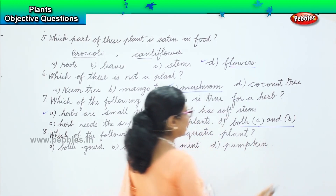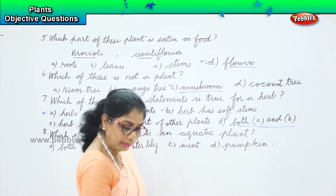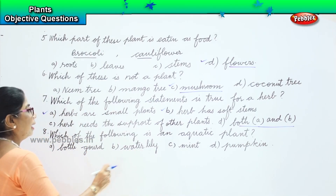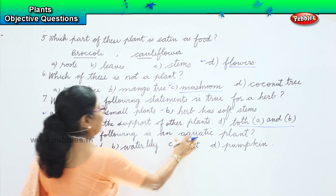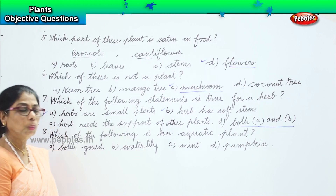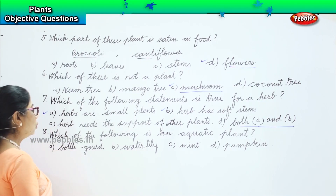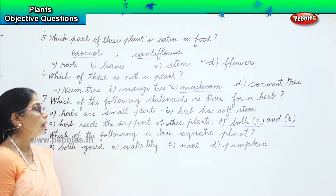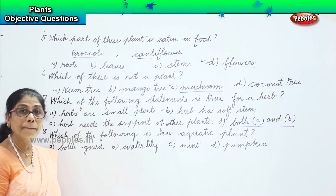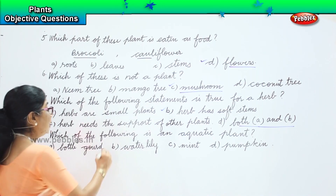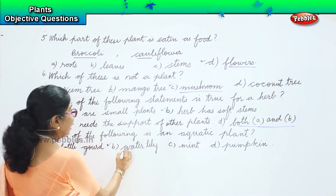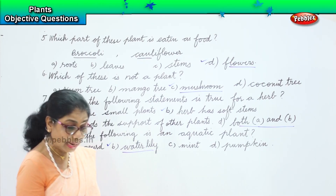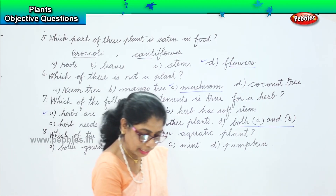The four options are given and they are asking which of these is an aquatic plant. Aquatic means that grows in water. Which plant grows in water? Does bottle gourd grow in water? Mint, pumpkin? No. So the answer is option B — water lily is an aquatic plant. Very good.